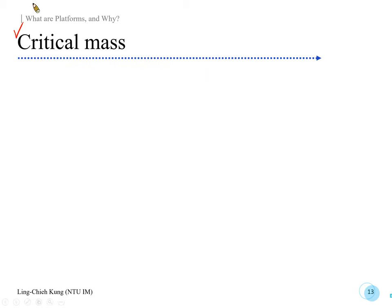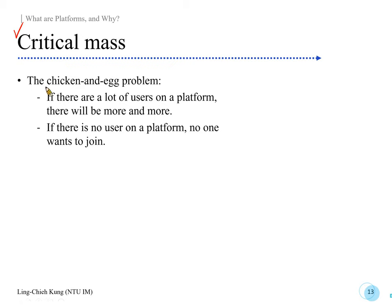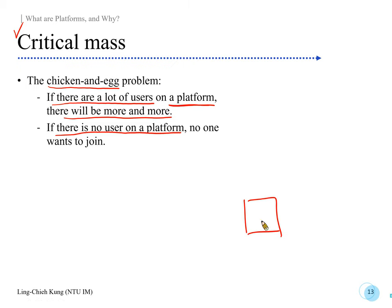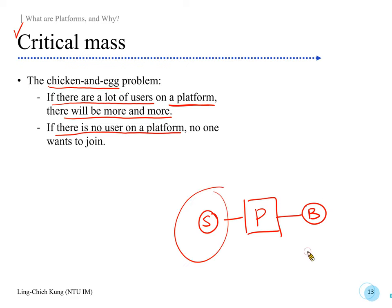The next topic is critical mass. We typically hear about the chicken-and-egg problem in many places, but especially in platforms. Imagine you are running a platform — if there are already a lot of users, there will be more and more. But at the beginning there are no users at all, so who should be the first one to join? If you have sellers, sellers attract buyers; if you have buyers, buyers attract sellers. So should you first get sellers or buyers? That's the chicken-and-egg problem for platforms.